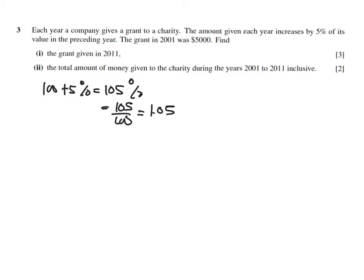So now the grant in 2001 was $5000. Find the grant given in 2011. So 2001 to 2011.